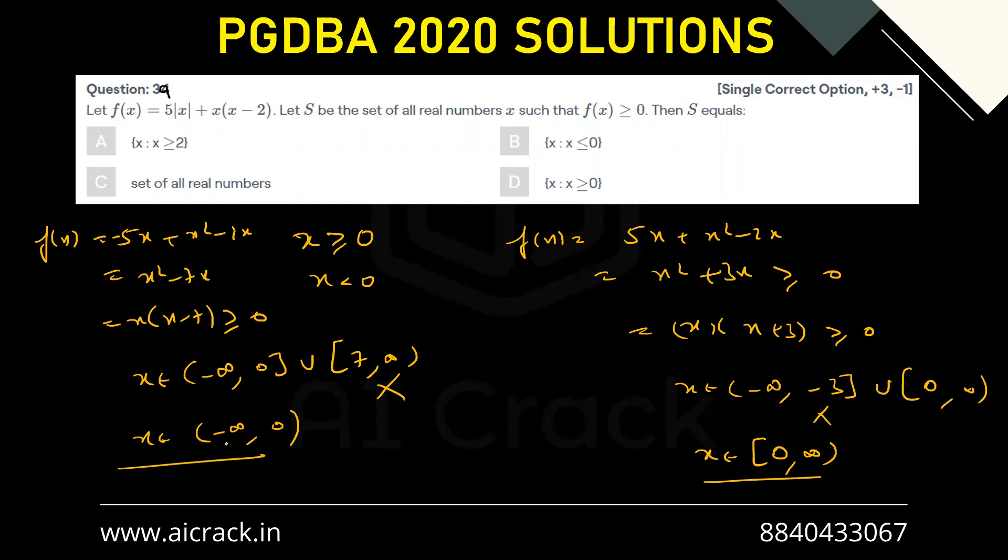If we take the union, we get x ∈ (-∞, ∞). So the set of all real numbers should be the answer.